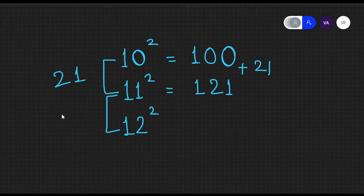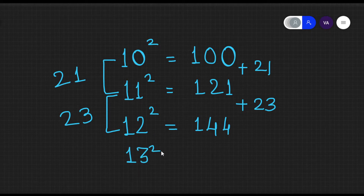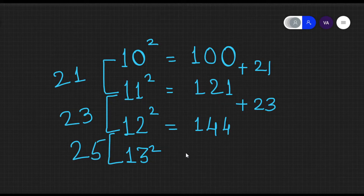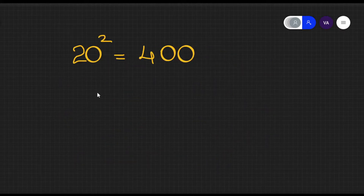Now let's find the square of 12. You do 11 plus 12, which is 23. Add 23 to 121 and you get 144 — the square of 12. Next, for 13 squared: 12 plus 13 is 25. Add 25 to 144 and you get 169. So simple!